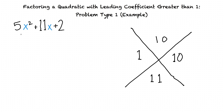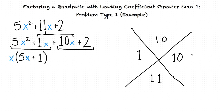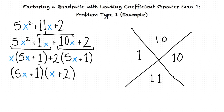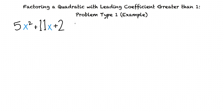Using the numbers 1 and 10, we rewrite the middle term 11x as 1x + 10x. Then we factor out the greatest common factor from the first two terms — x — and from the last two terms — 2. Since both resulting terms contain the factor (5x + 1), we factor that out, leaving (5x + 1)(x + 2). This is the same result as our first method. Both techniques are valid for problems like this, but they take practice.